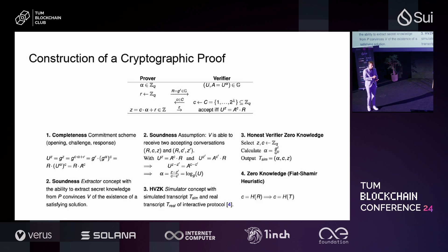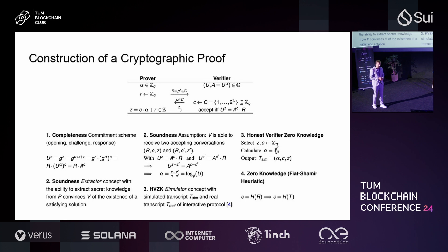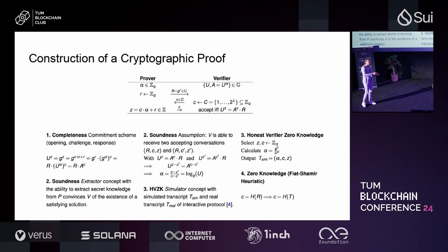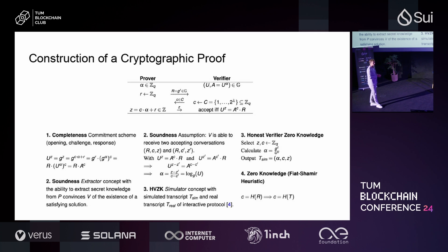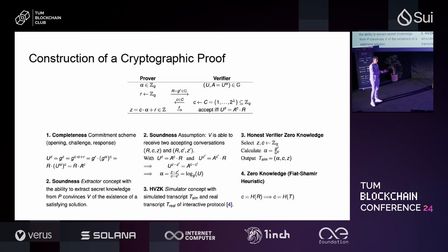The zero knowledge property means the verifier should not learn anything about the alpha parameter. You use the simulation paradigm: you have an ideal operation of the whole protocol and a real execution, and you compare these two executions — they should be indistinguishable. The verifier should have access to all the parameters being generated in the protocol. If the verifier cannot distinguish the real execution from an ideal one, it does not actually learn something it would not have known beforehand.